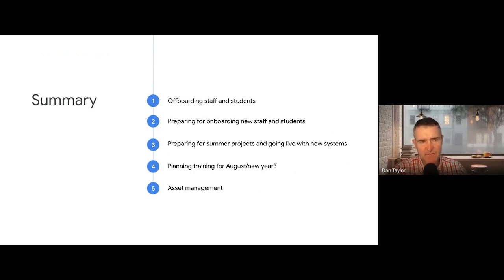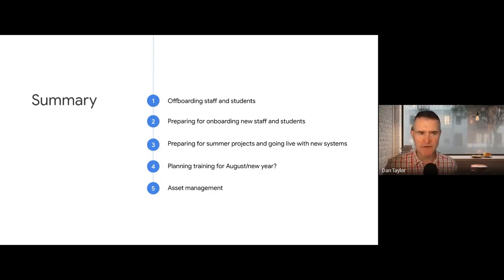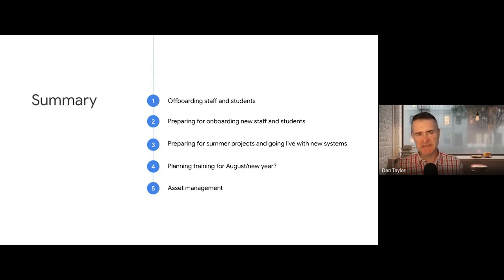First is offboarding — international schools have higher turnover of staff and students, so there's always an offboarding process. We'll talk about the options in Google and the general process. Second is preparing for onboarding new staff and students, which is a big thing since the average staff member stays three to four years at international schools.